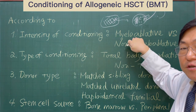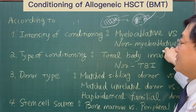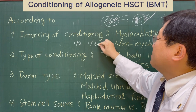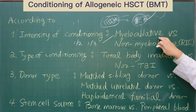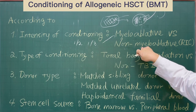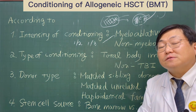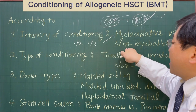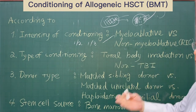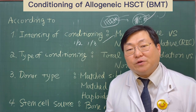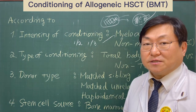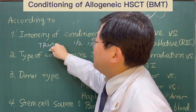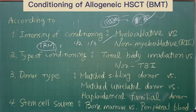When we consider the dose intensity of non-myeloablative stem cell transplantation, the conditioning intensity is usually half or one-third of the myeloablative approach. So after receiving this kind of non-myeloablative conditioning, the patient will be more tolerant of the chemotherapy or radiation therapy. Even elderly patients or patients with comorbidities can tolerate the allogeneic stem cell transplantation, and treatment-related mortality will be decreased compared with myeloablative transplantation.